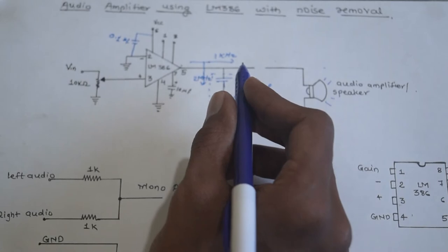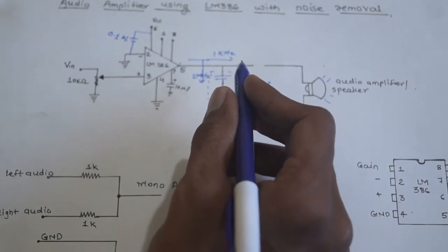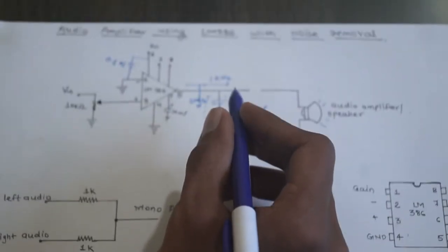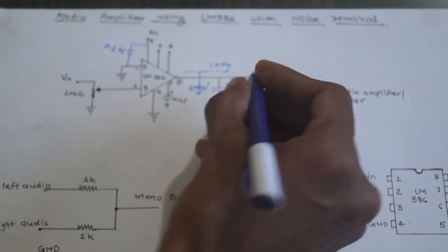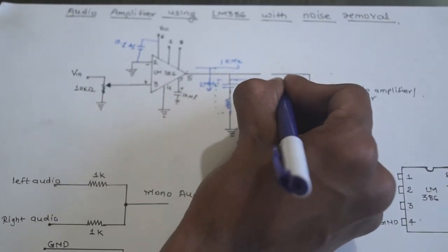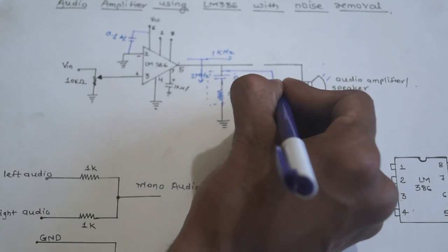I found the best solution is to use a 0.1 microfarad disc-type capacitor to replace this high-pass filter.